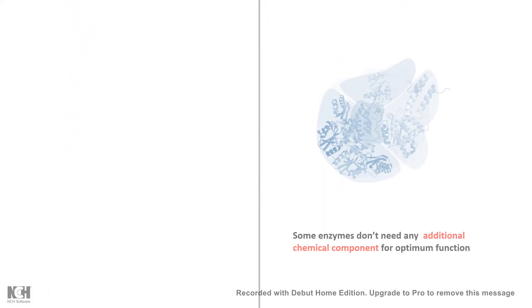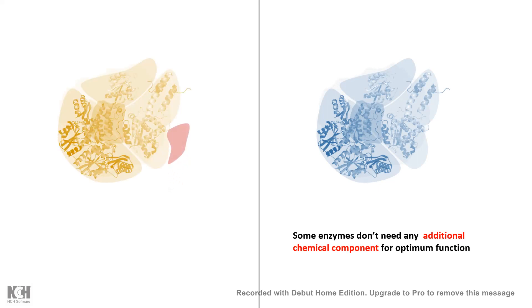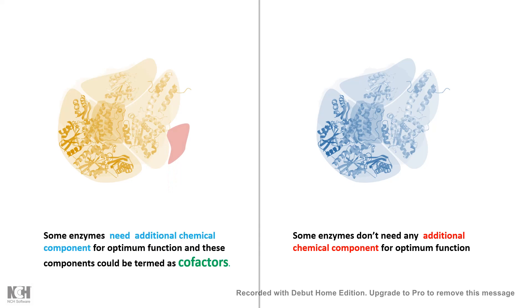Some enzymes don't need any additional help. Their tertiary protein structure and how it is folded is everything that determines catalytic activity, and it's sufficient for optimum function. But in some cases, some enzymes need additional factors for optimal activity. These additional factors which govern optimum enzyme activity are known as cofactors — it's like a helping hand.